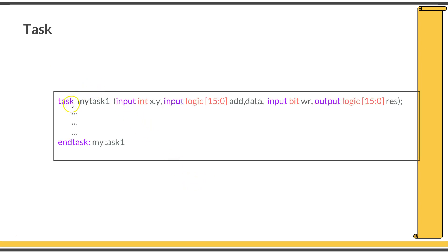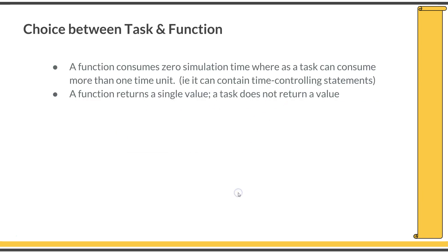Here is an example of defining a task: within the 'task' and 'endtask' keywords, you specify the task functionality — the keyword 'task', followed by the task name and the argument list with their directions.